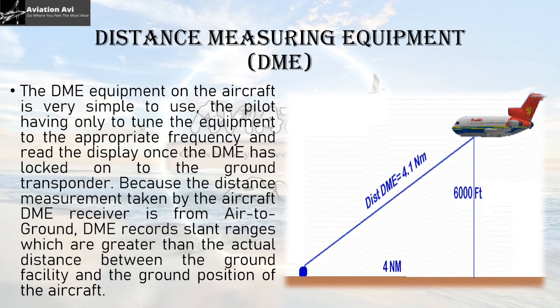The third and last equipment is the Distance Measuring Equipment, or DME. The DME equipment on the aircraft is very simple to use — the pilot only has to tune the equipment to the appropriate frequency and read the display once the DME has locked onto the ground transponder. Because the distance measurement is air-to-ground, the DME records slant range, which is greater than the actual ground distance. For example, the aircraft may be 4 nautical miles from the facility by ground distance, but only 1.4 nautical miles from the actual touchdown position by slant range.